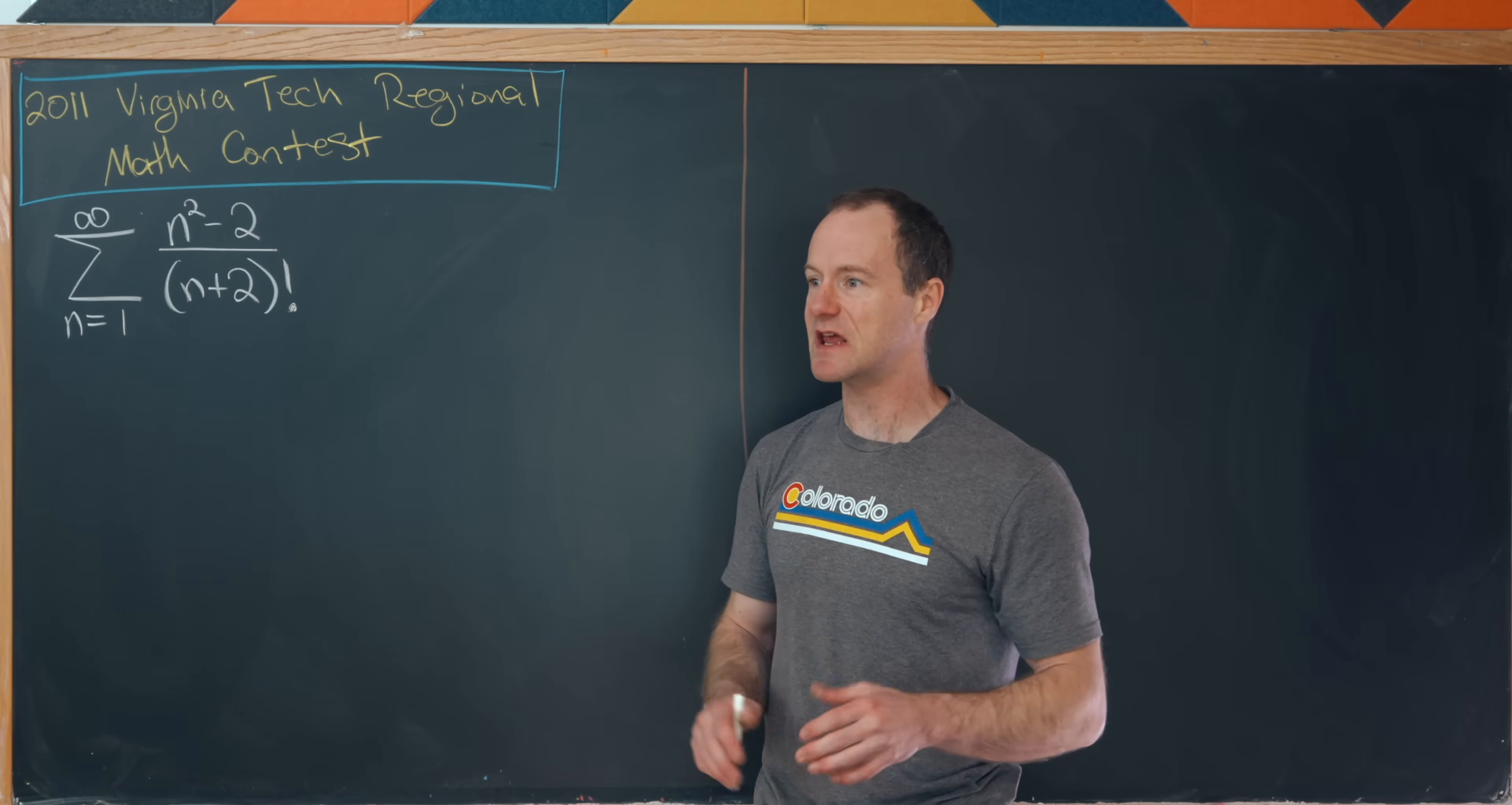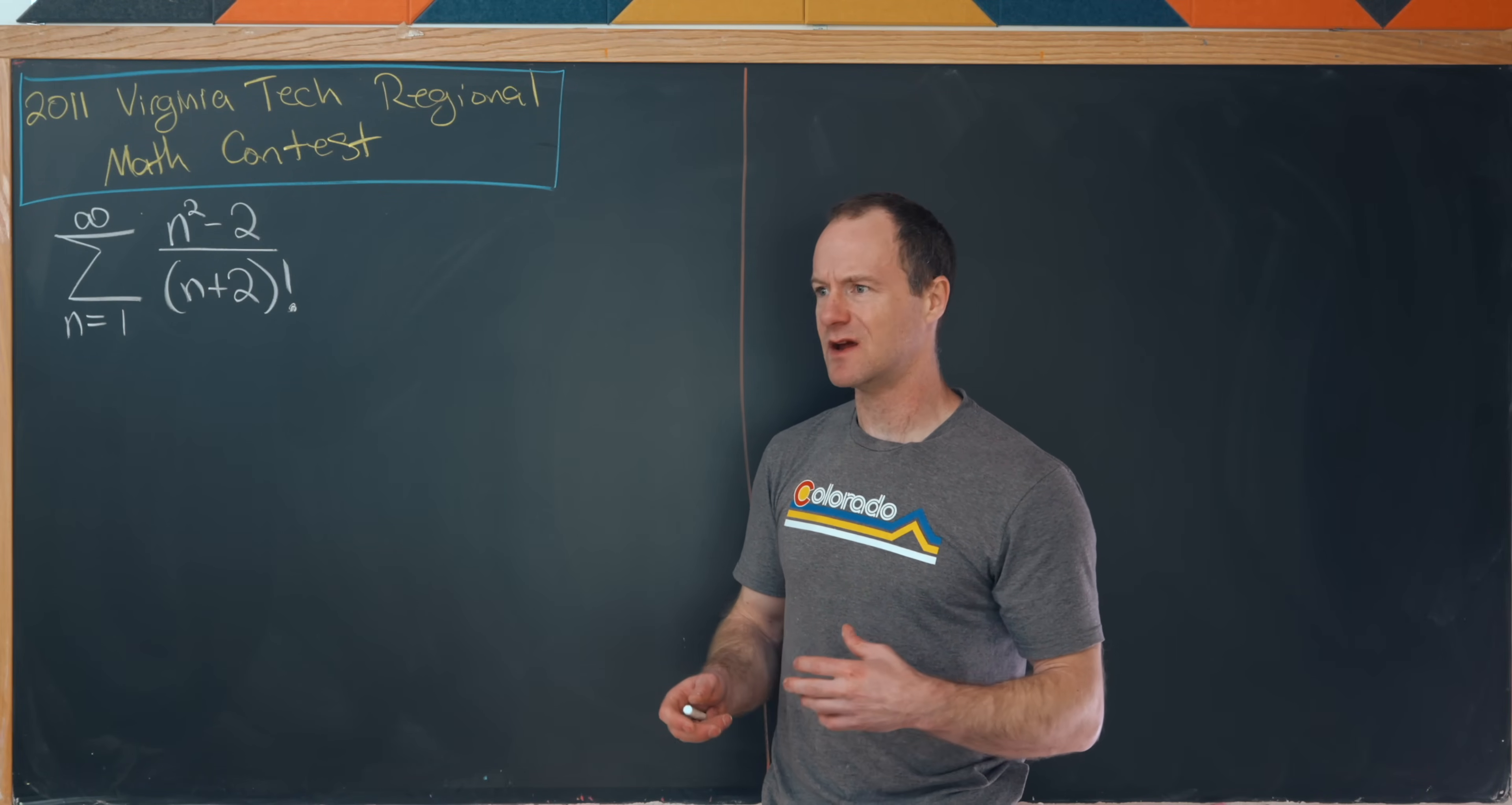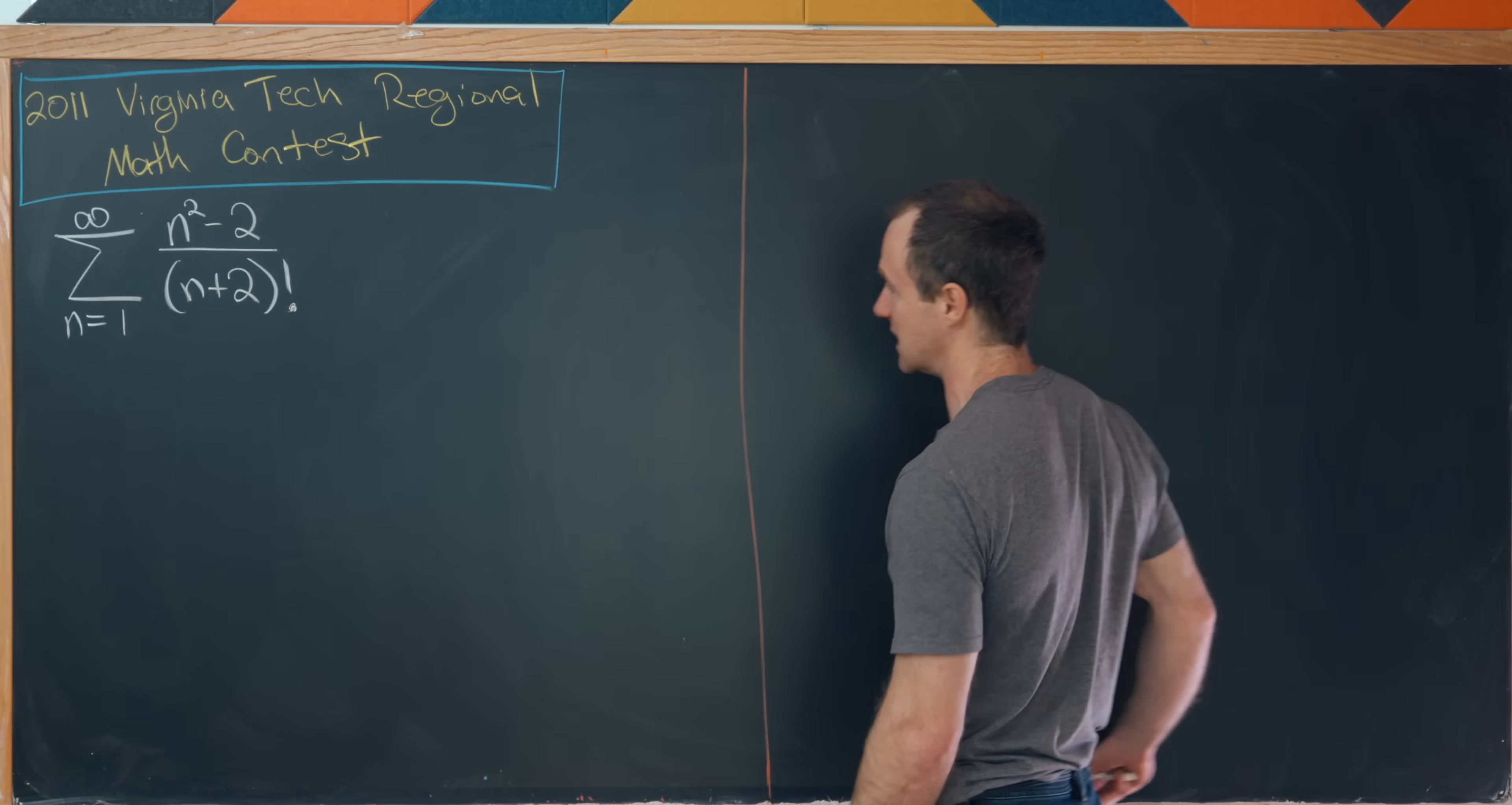And really the trick here is just to see this as some kind of well-known sums. And I guess maybe the skill here is just nimbleness with infinite series. Okay, so perhaps the first thing that I'd like to do to get off the ground here is re-index this thing.